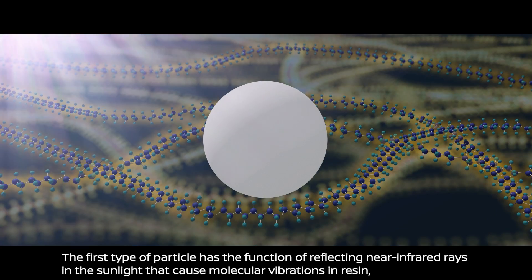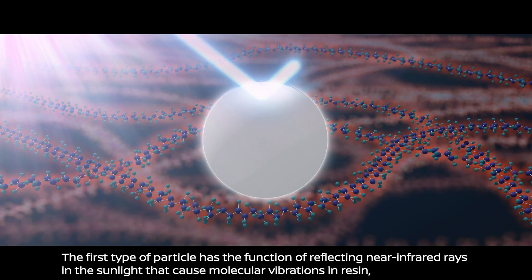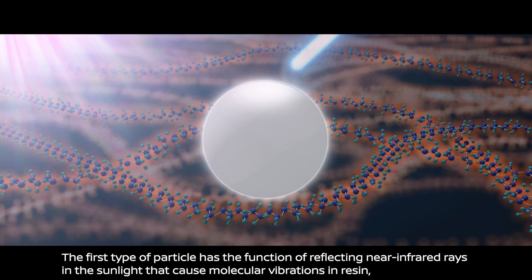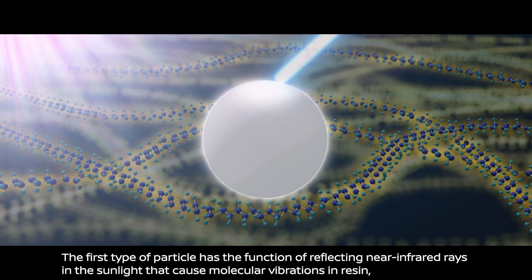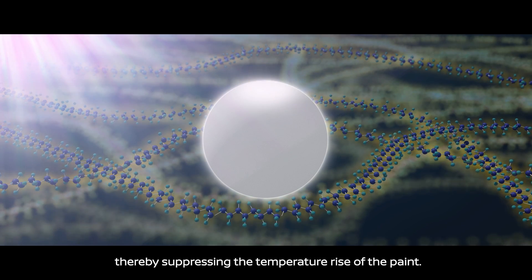The first type of particle has the function of reflecting near-infrared rays in the sunlight that cause molecular vibrations in resin, thereby suppressing the temperature rise of the paint.